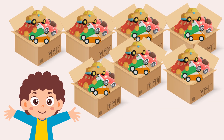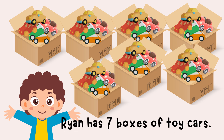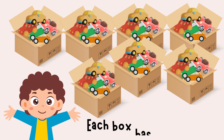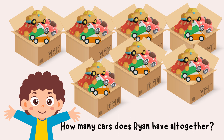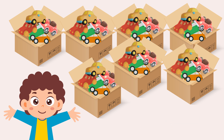Let's solve one together. Ryan has seven boxes of toy cars. Each box has five cars. How many cars does Ryan have all together? We see 'each box,' so we multiply. Seven times five equals thirty-five. Ryan has thirty-five toy cars.